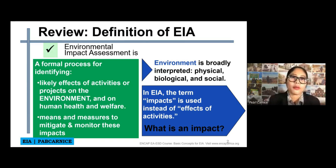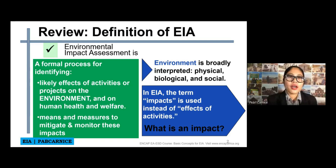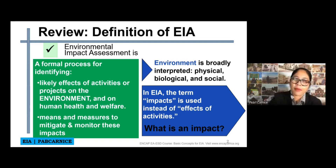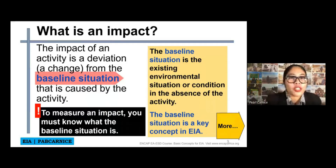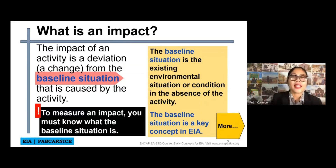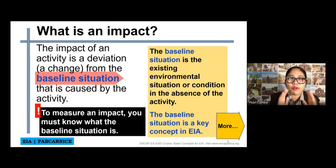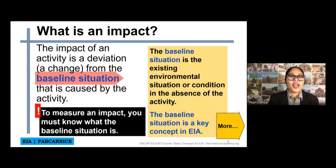In EIA, the term 'impact' is used instead of 'effects of activities.' The impact of an activity is a deviation or a change — not an effect or a result, but a change from a baseline situation that is caused by the activity. When we say baseline situation, it's actually the existing conditions — the reference point at a specific time.